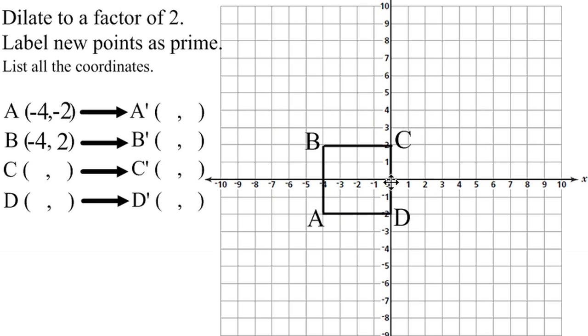C is neither left or right, so that is 0, and then up 2 is positive 2. That's the location of point C.